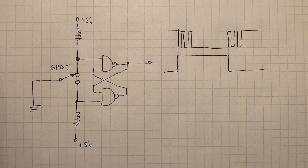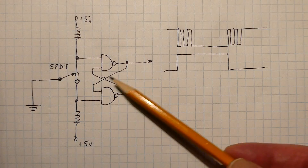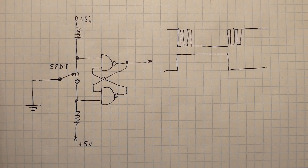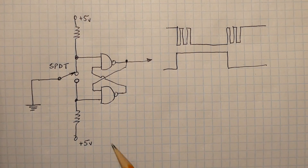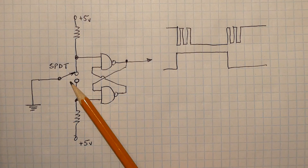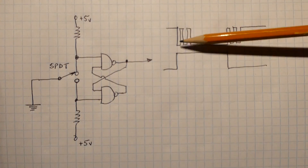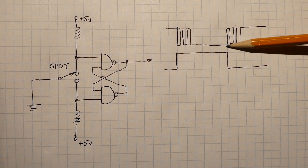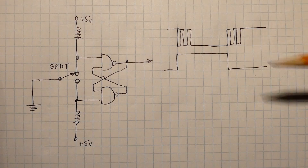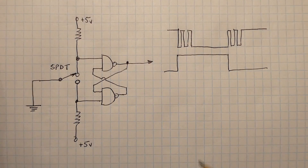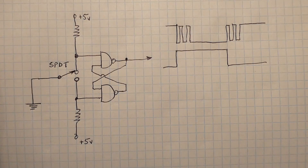Here's a better way to debounce a switch using an RS flip-flop. I made one using two cross-coupled NAND gates, so we don't have to worry about an RC time constant — no resistors or capacitors involved. The catch is we have to use a single-pole double-throw switch. There are no delays: on first press the output goes high, on first release it goes low — a clean output. But there's an even simpler circuit using an RS flip-flop that we'll look at next.